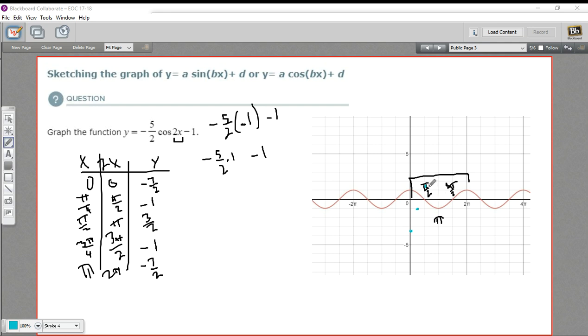Then we head back down again. That's our high point. So at 3π over 4, which is going to be right here, we're at negative 1. So back down to negative 1. And then at π, we're down to negative 7 halves again.